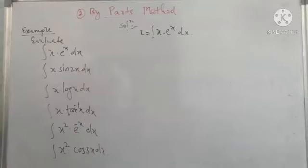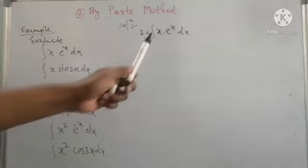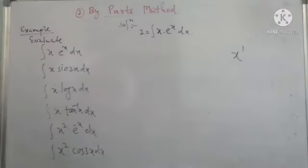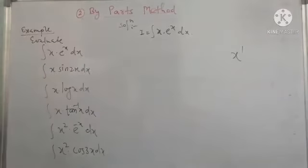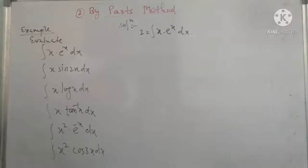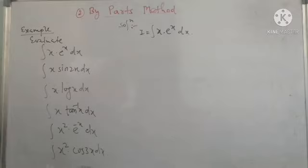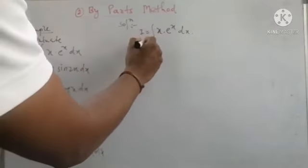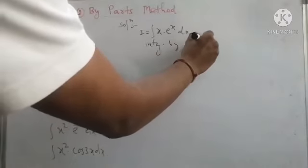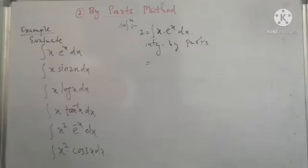Example: I = ∫x·eˣ dx. Here there is a product of two terms: x has power 1, so it is an algebraic function, and eˣ is an exponential function. This is a product of algebraic and exponential functions. Applying the by parts method, since there are no logarithmic or inverse trigonometric functions, we take x as the first term and eˣ as the second term.